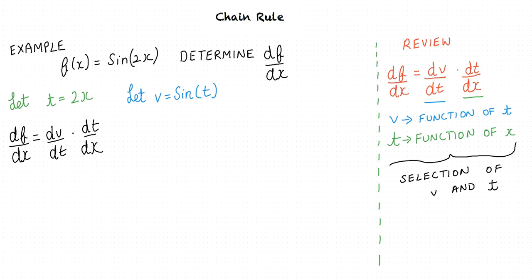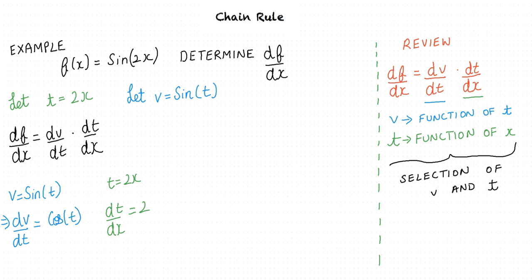From the chain rule formula, df/dx equals dv/dt times dt/dx. The next step is to evaluate the individual derivatives. Since v equals sin(t), dv/dt equals cos(t). Since t equals 2x, dt/dx equals 2. We substitute these derivatives into the chain rule formula.